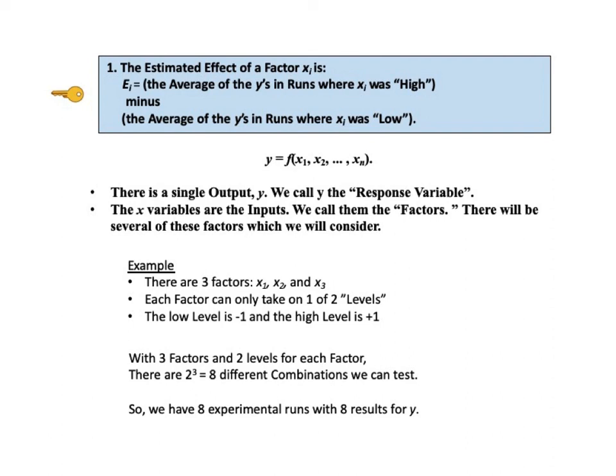Okay, now let's go back to the top and take a closer look at each of these four keys to understanding. Key to understanding number 1 says, The estimated effect of a factor X sub i is E sub i, where E sub i is the average of the y's in the runs where X sub i was high, minus the average of the y's in the runs where X sub i was low. So, this seems like a common sense way to do it. Y is the output variable. It is also called the response variable. The X variables are the inputs in the function Y equals F of X1, X2, dot dot dot, Xn. We also call them the factors.